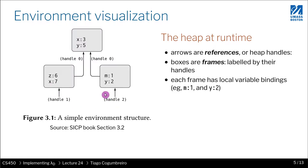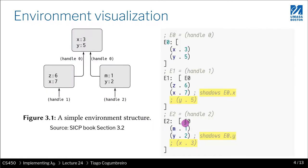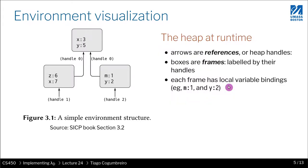These arrows are references, and references are represented here with these names E0, E1, which is just an alias for handle 0, handle 1, and handle 2. This is actually how the code will show, how the test cases will render your environment.